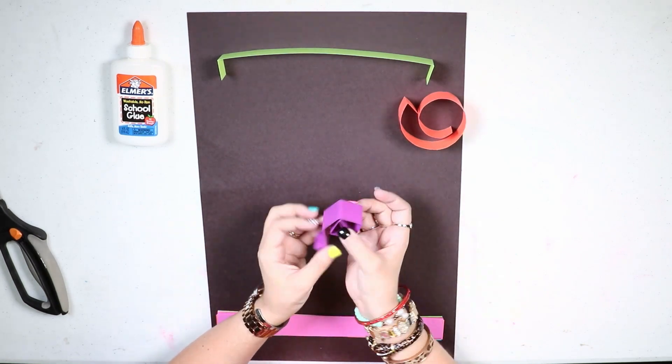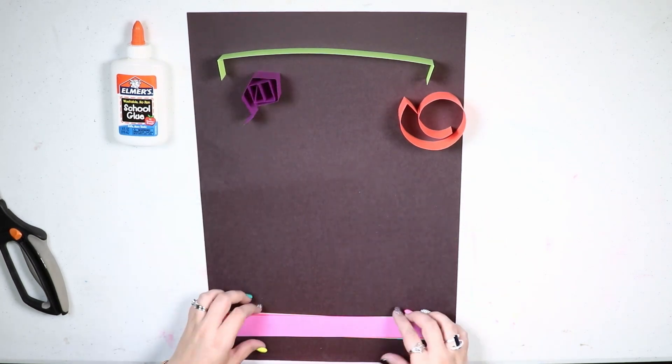This one I'm just rolling on top of itself. It's going to create a spiral but it's going to be a square shaped spiral.